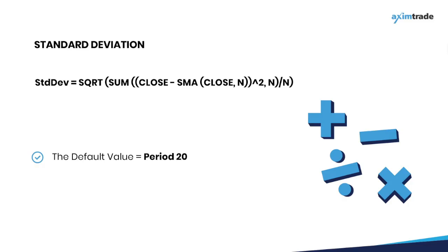The final step is to take the square root of the equation. By default, the standard deviation indicator is calculated based on period 20, but traders can change this according to their preferences.